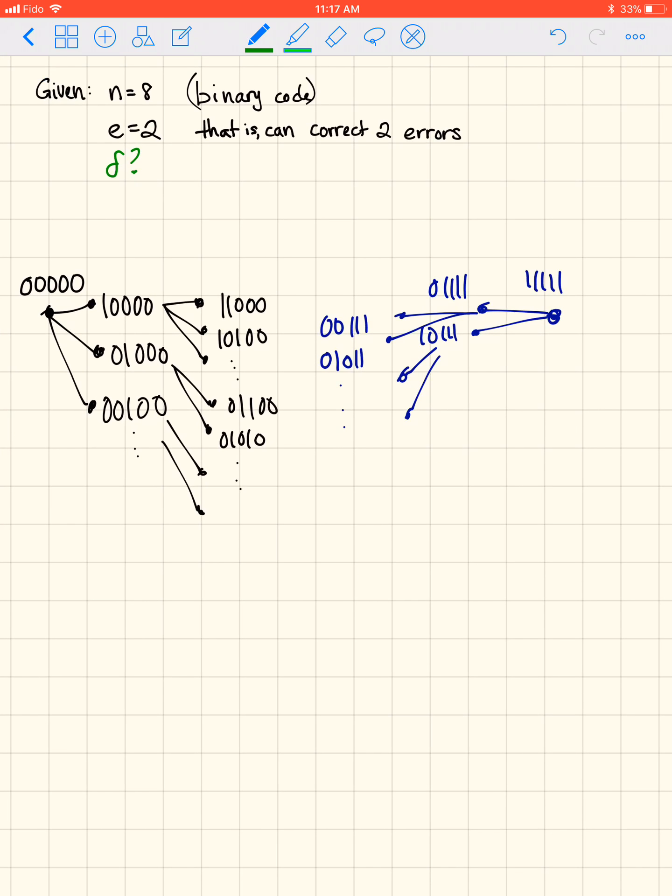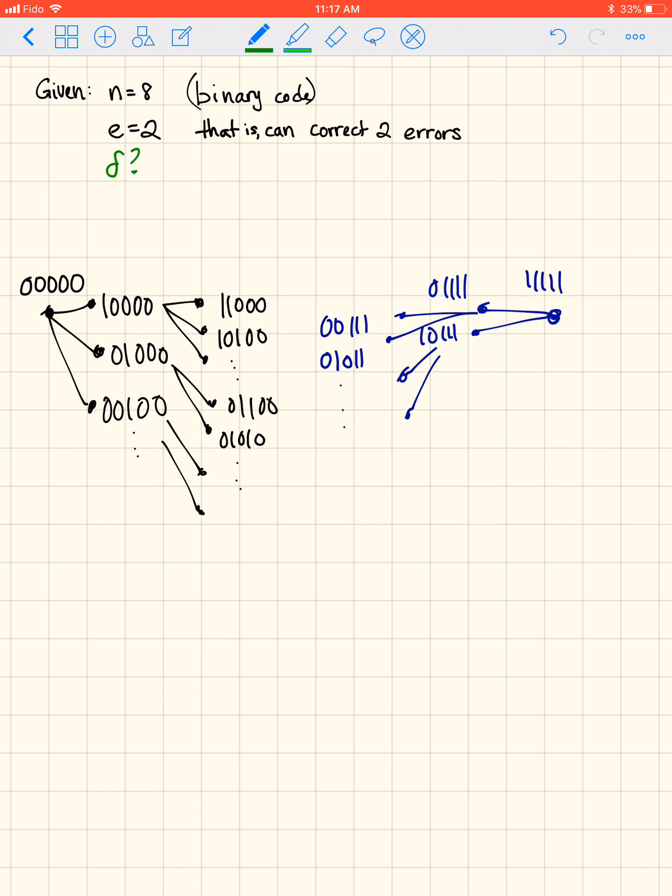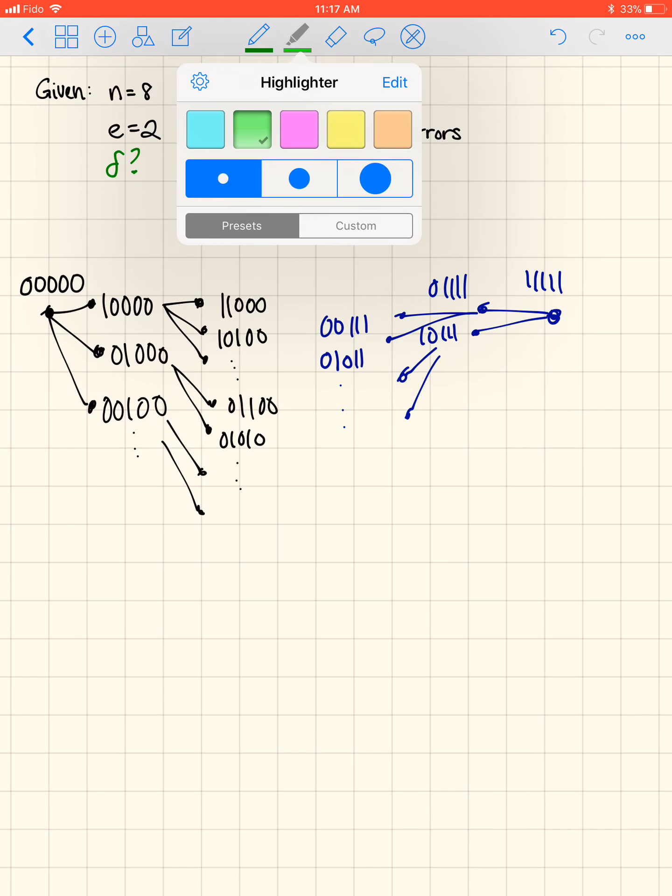So let's look at it this way. We want to correct two errors. Say we had a code word, we had 0, 0, 0, 0, 0. We can assume that's in a linear code. And here, and I'll highlight them in yellow, these are all the words that are one step away from the code word, just changing one bit. And then, in orange, we have the ones that are two steps away.